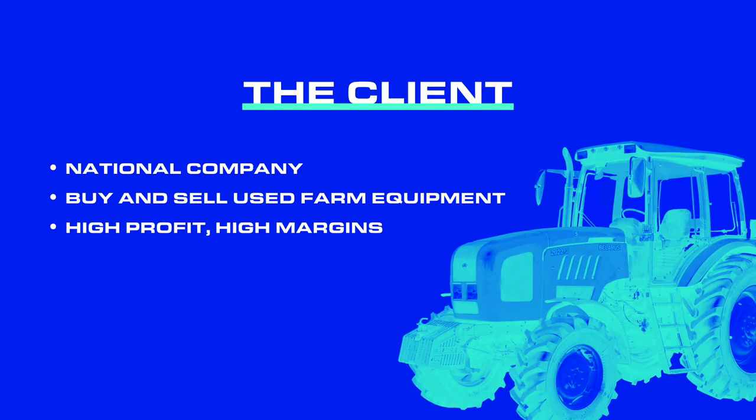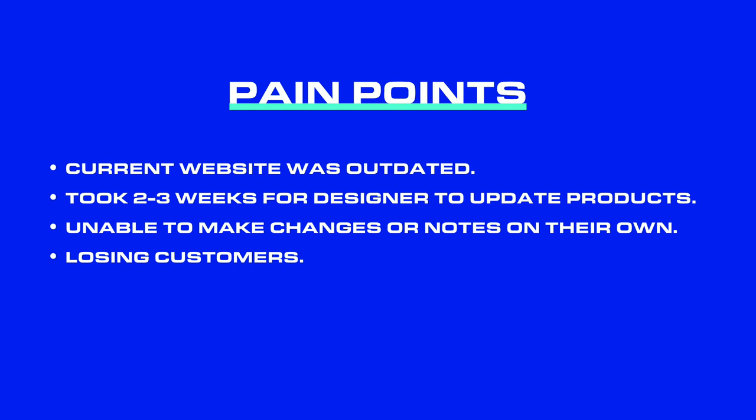So you have a better idea of who my client is: this is a national company and what they do is they buy and sell used farm equipment. This farm equipment sells for a lot of money, so it's a very high profit, high margins business. Each individual piece of equipment they sell, they're making a lot of money. The issue they were running into is their current website was outdated and it was really just holding them back from selling as many pieces of equipment as they could.